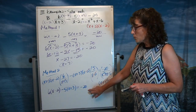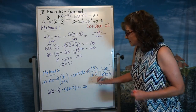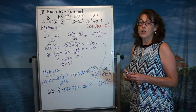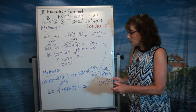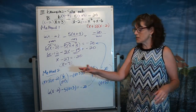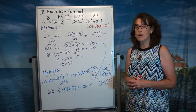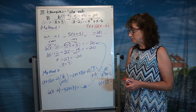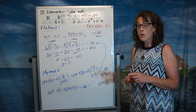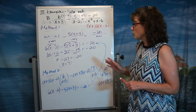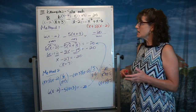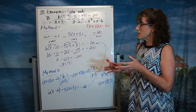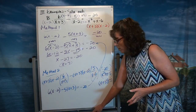This is exactly the same equation as before. So we can distribute, combine like terms, slide that 27 over, giving us the very same answer of x equals 7. We do need to check and make sure that x equals 7 is really going to work.